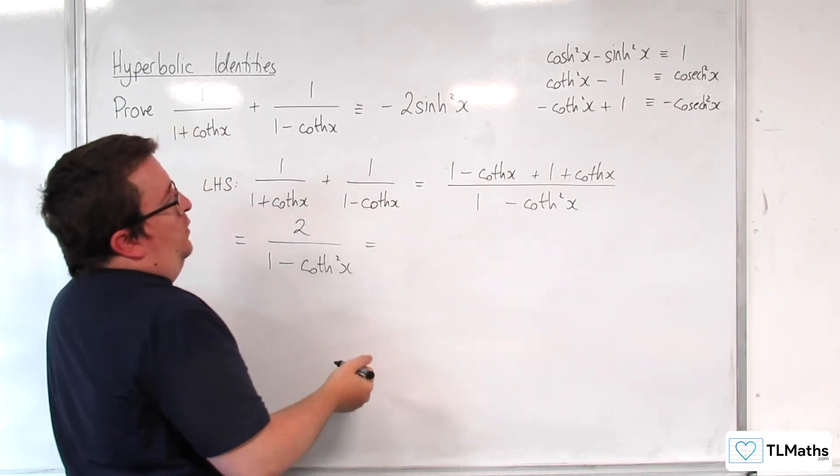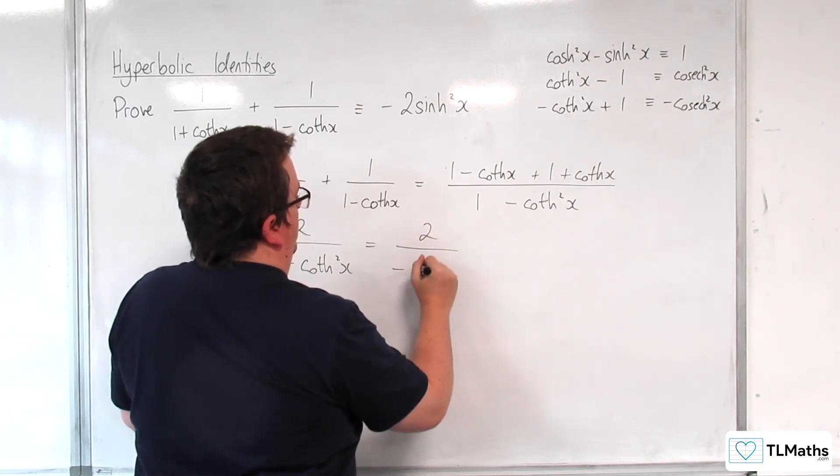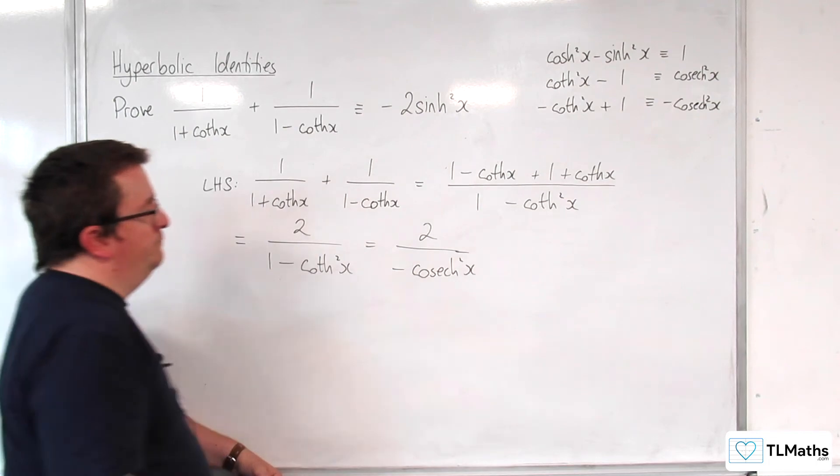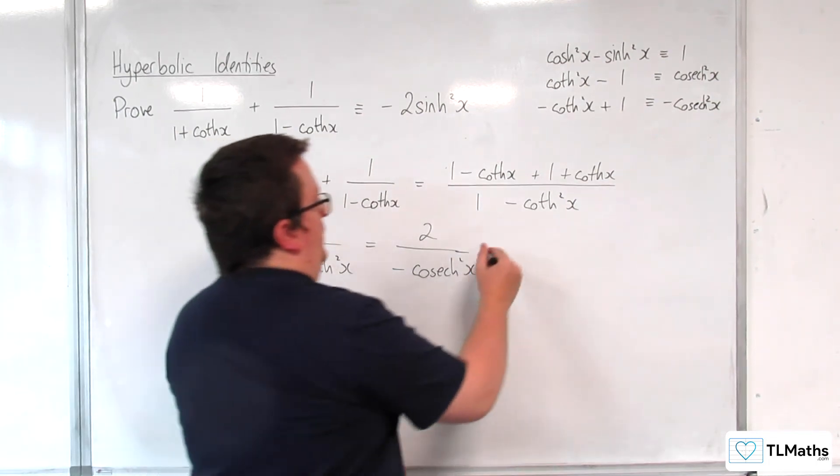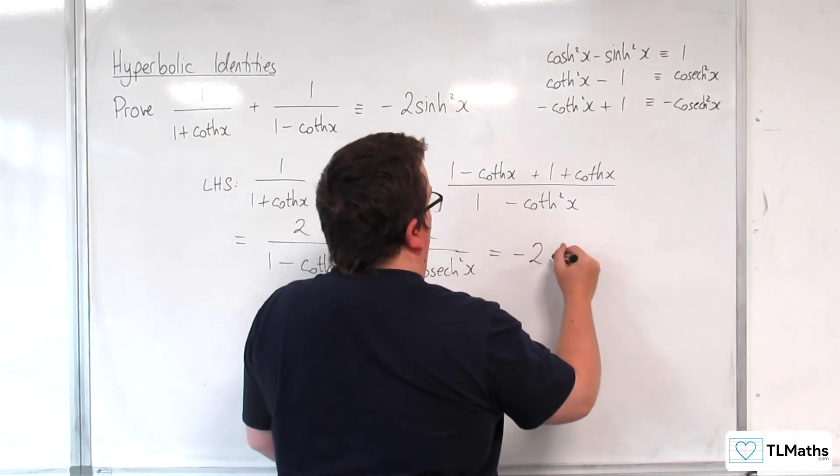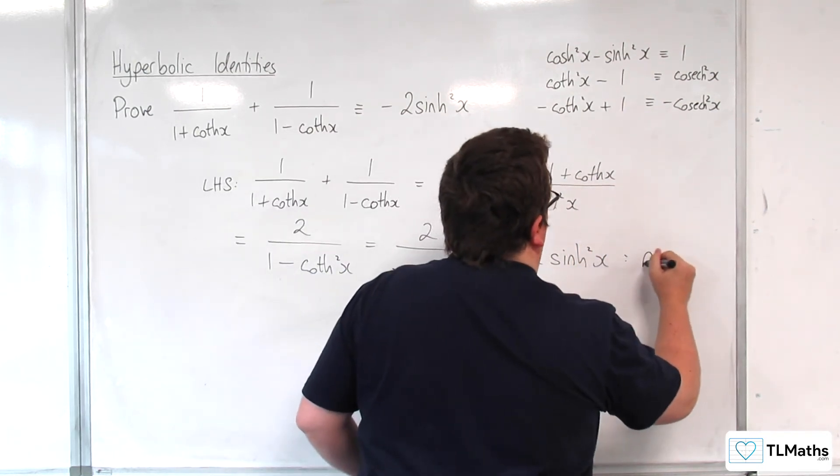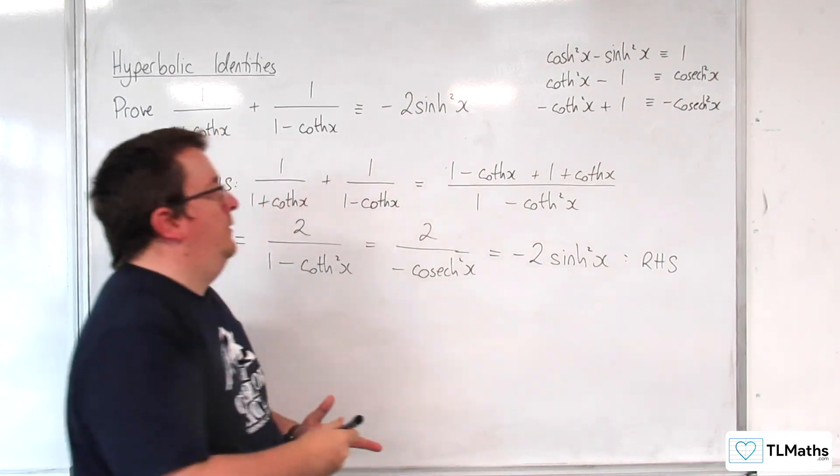So this, I've got 2 over minus cosech squared x, and so that's equal to minus 2 sinh squared x, which was my right hand side.